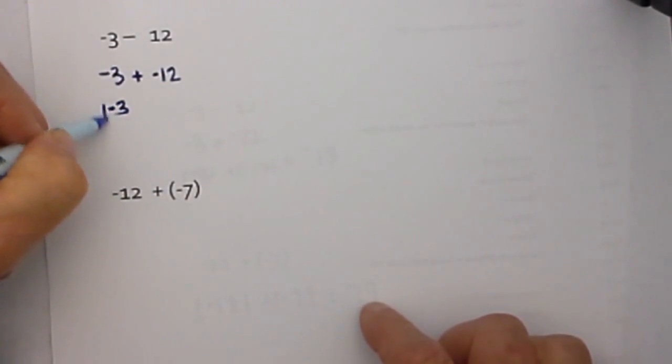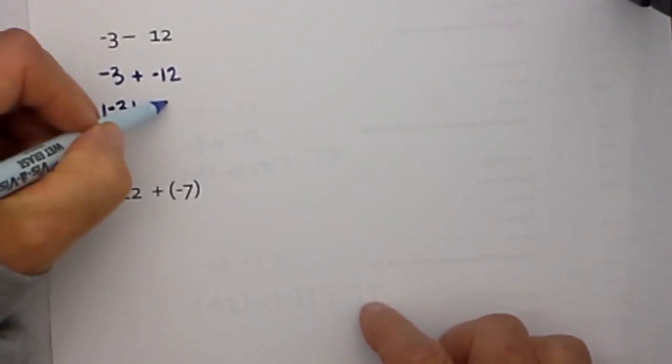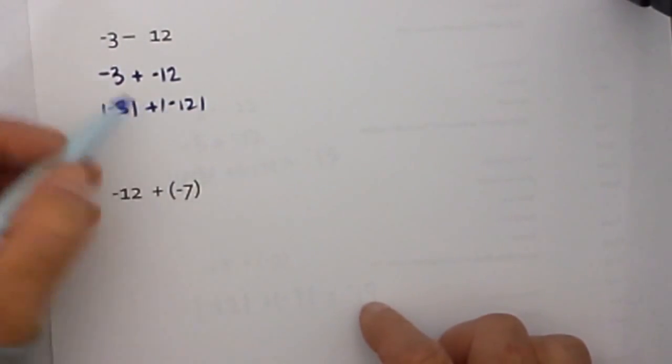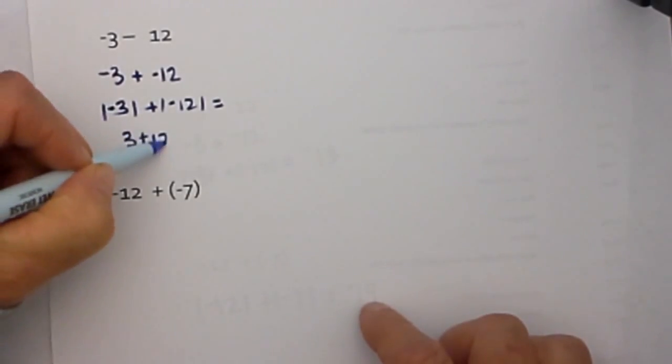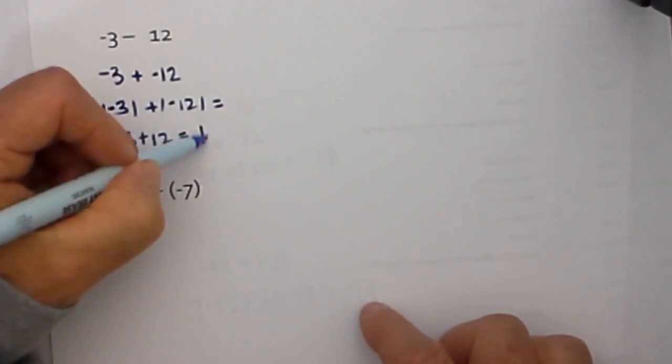Yes. So we will be adding the absolute value of 3 plus the absolute value of negative 12, which is 12 plus 3 which is equal to... I will rewrite this. So basically it will be 3 plus 12 which is equal to 15.